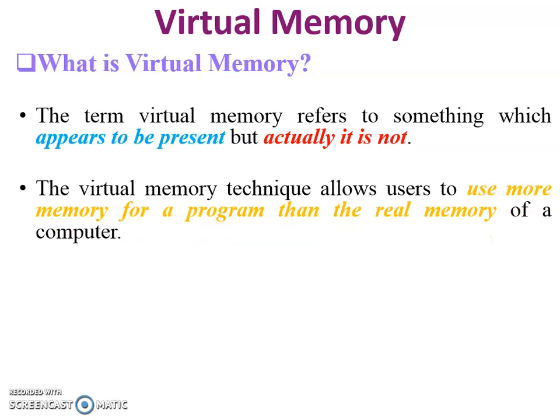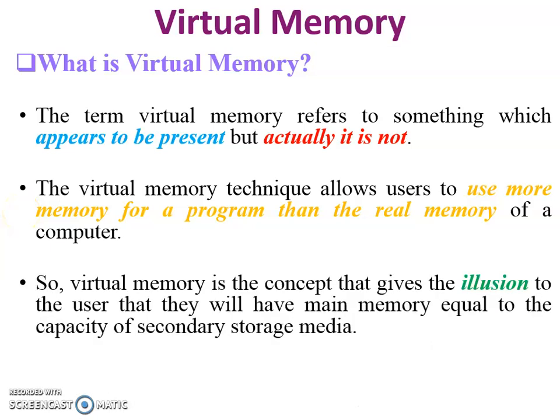The concept of virtual memory is to use more memory for a program than the real memory available. For example, when a program requires more memory compared to available physical memory, virtual memory will be used. So virtual memory is the concept of illusion — the user thinks that the size of main memory equals the size of secondary storage.